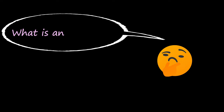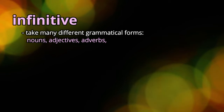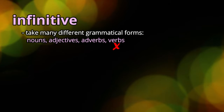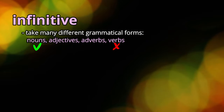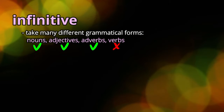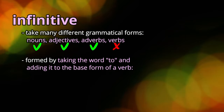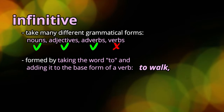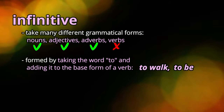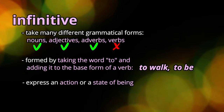So, what is an infinitive? Well, an infinitive can take many different grammatical forms but they do not function as verbs. Instead, they are used as nouns, adjectives, or adverbs. You can form them by taking the word 'to' and adding it to the base form of a verb. For example, you can say 'to walk' or 'to be.' Infinitives can express an action or a state of being.